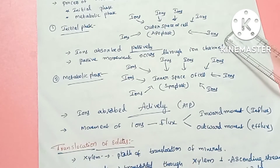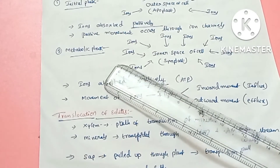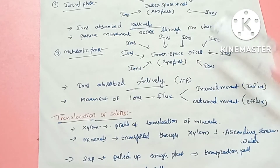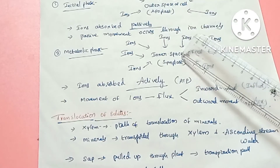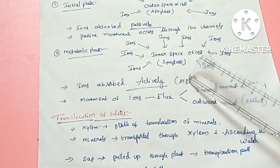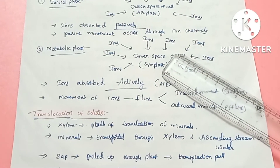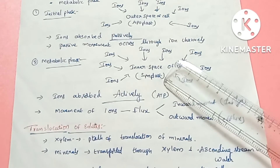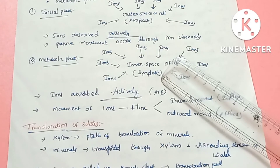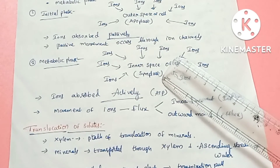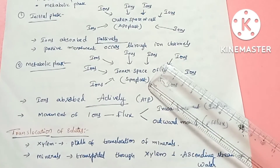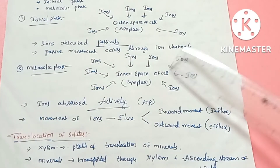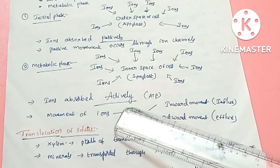The next phase is the metabolic phase. In the metabolic phase, ions are rapidly taken into the inner cells. The ions pass into the inner space — the symplast area — which is inside the cells. This involves the cytoplasm and vacuoles. This phase requires energy and is therefore an active process.